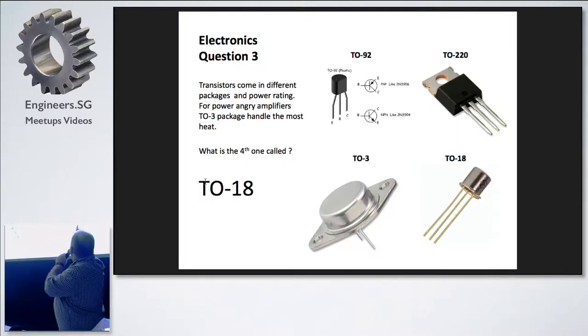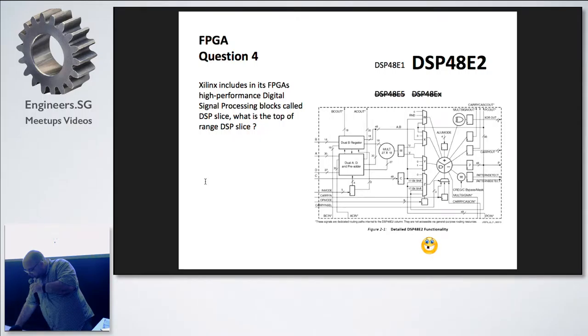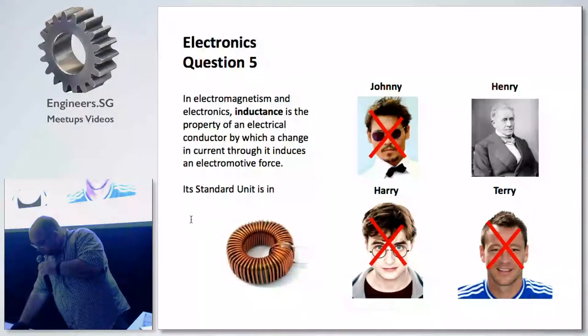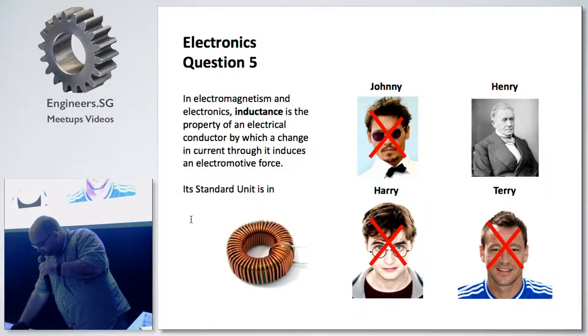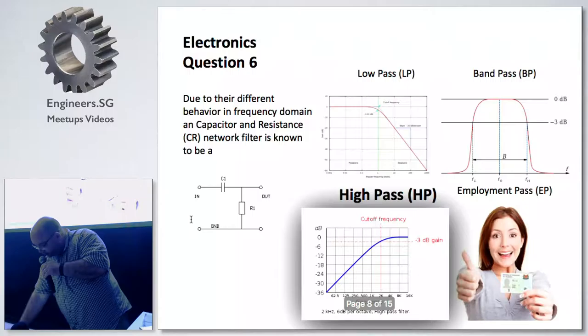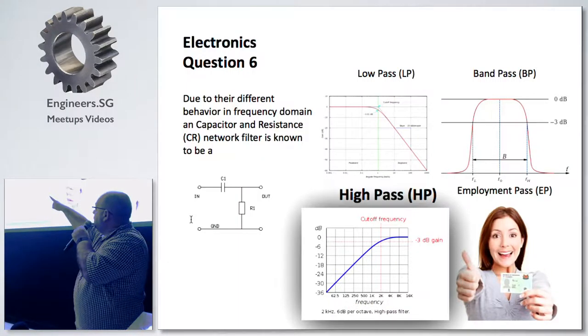Vivado Design Suite is free, so you can program FPGAs with free tools. The fourth transistor is 018. The Ultra Scale is the latest FPGA, this slide is 48E2.